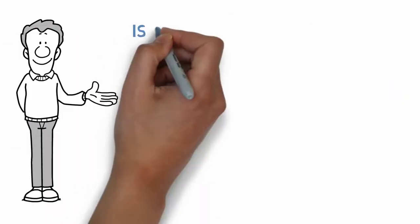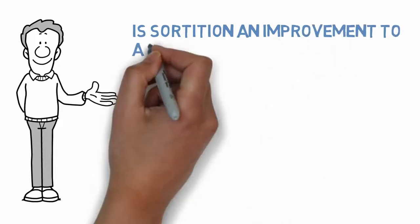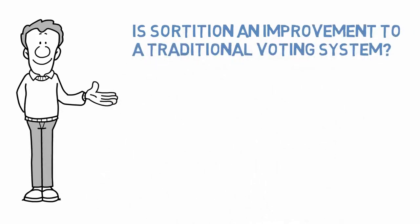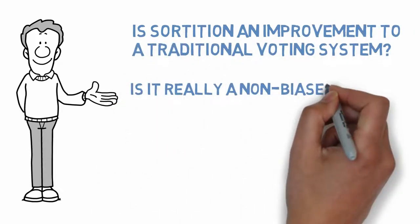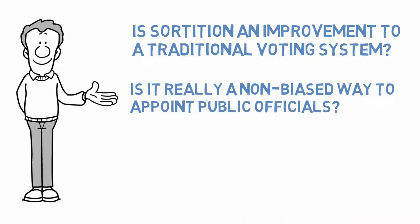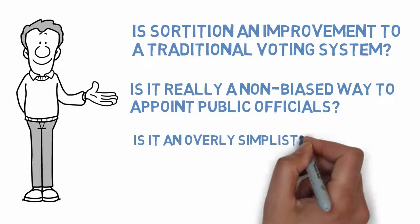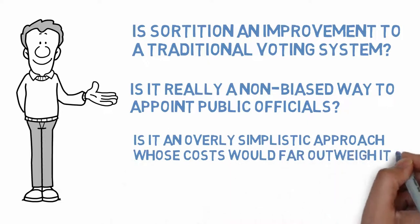So what do you think? Is sortition an improvement to a traditional voting system? Is it really a non-biased way to appoint public officials? Or is it an overly simplistic approach whose cost would far outweigh its benefits? Let us know in the comments below.